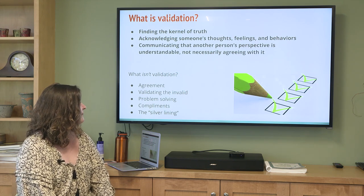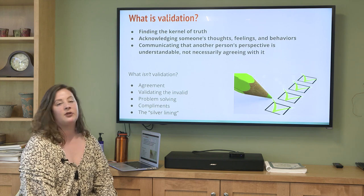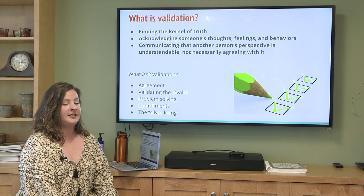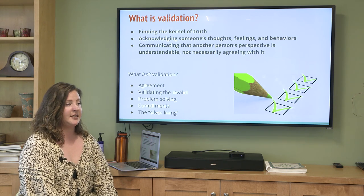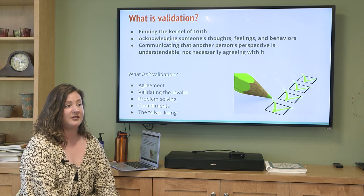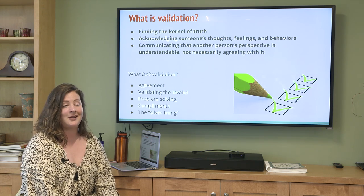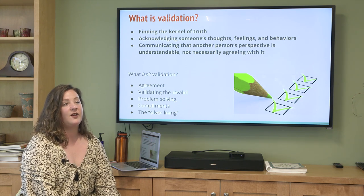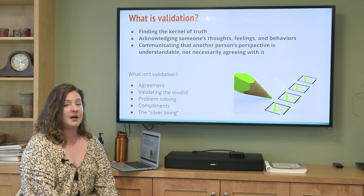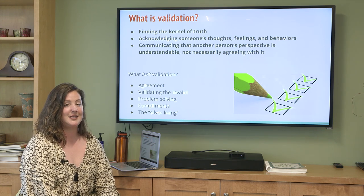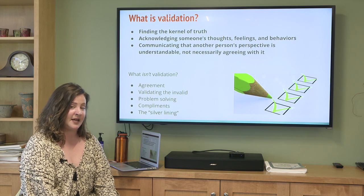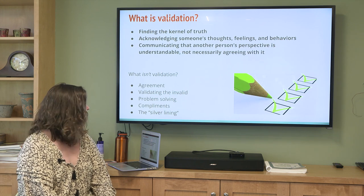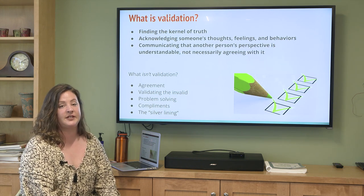Validation is also not validating the invalid. We are not going to validate someone for doing something that did not align with family values. For example, if someone is stealing, we are not going to validate that they stole; however, we might validate that they felt so desperate and needed money so desperately that they chose to steal. So again, we're not validating the invalid behavior — we're validating the emotions and their experiences.